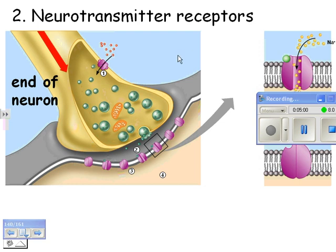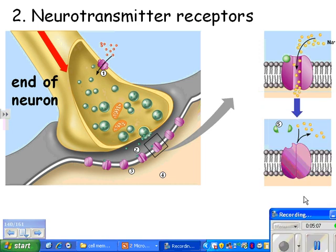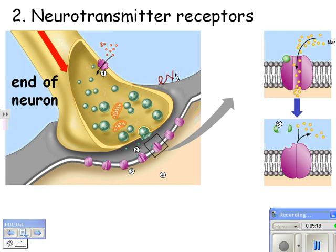Another example of communication that needs these proteins would be neurotransmitter receptors. Here's a nerve cell — the very end of a nerve cell — and this might be a muscle cell or another nerve cell. What happens is these synaptic vesicles — just another type of transport vesicle — when they get the right signal, they do exocytosis. Their neurotransmitters, like serotonin, come out and diffuse over.